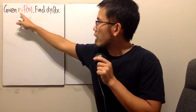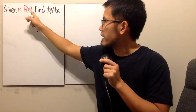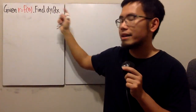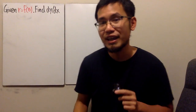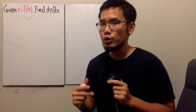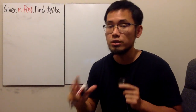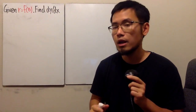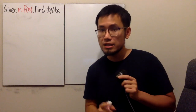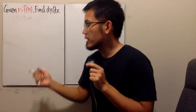We are given r is equal to f of theta, and we are going to find dy/dx. Namely, we are trying to see how to find the slope of the line tangent to the polar curve. Let me give you a picture first.